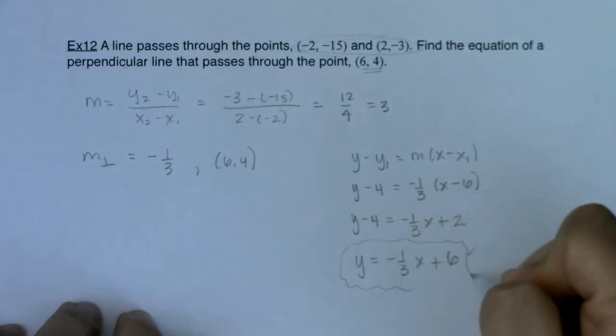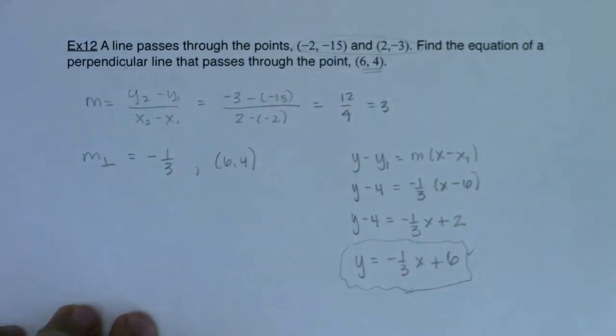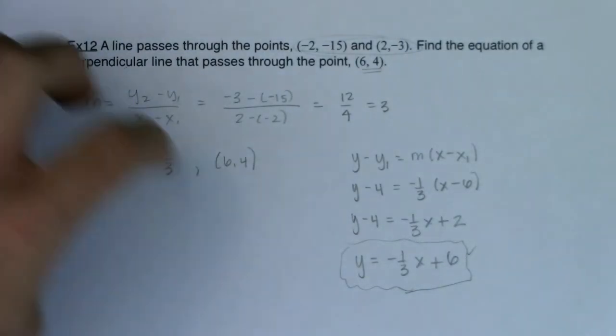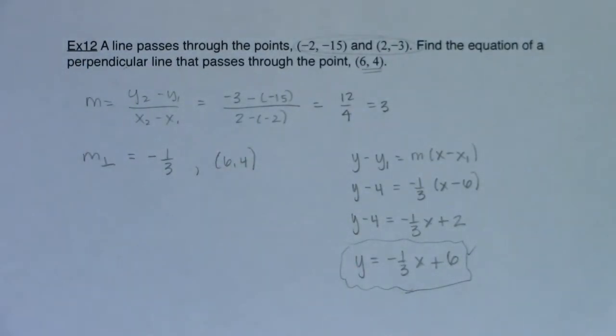So there's the answer to my question. I have found the equation of a line perpendicular to my given line that went through the point (6, 4).